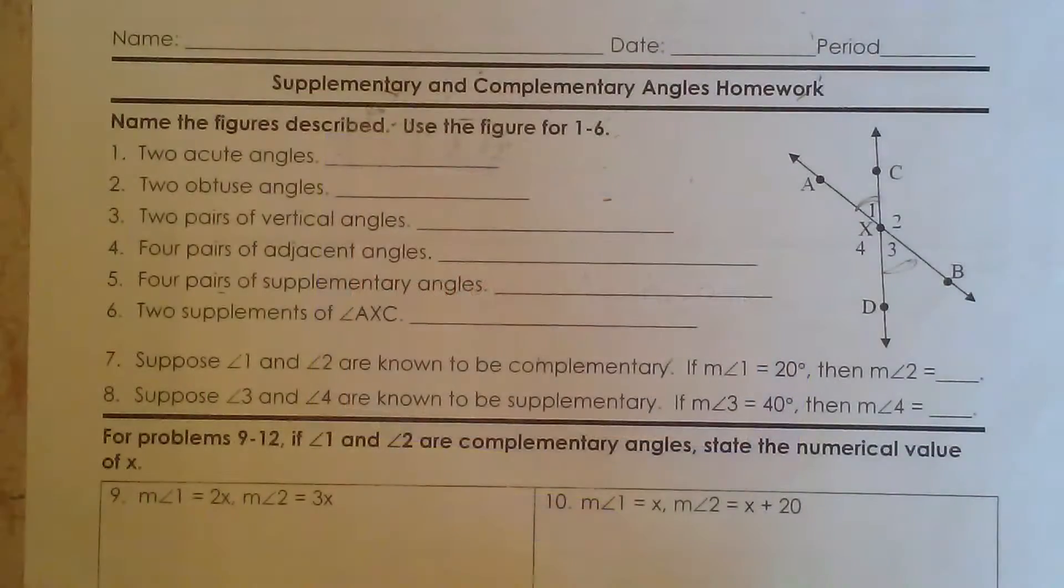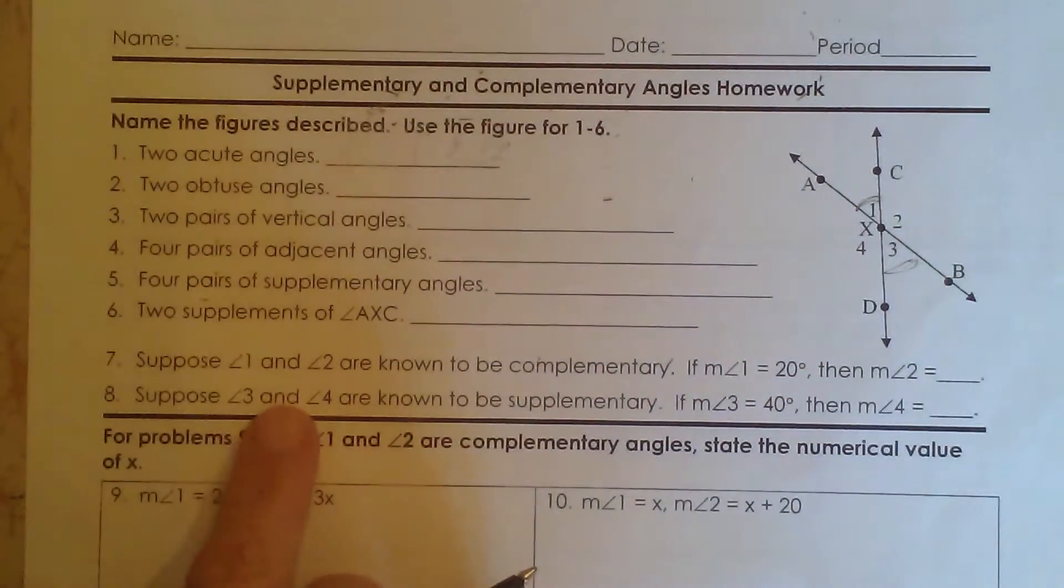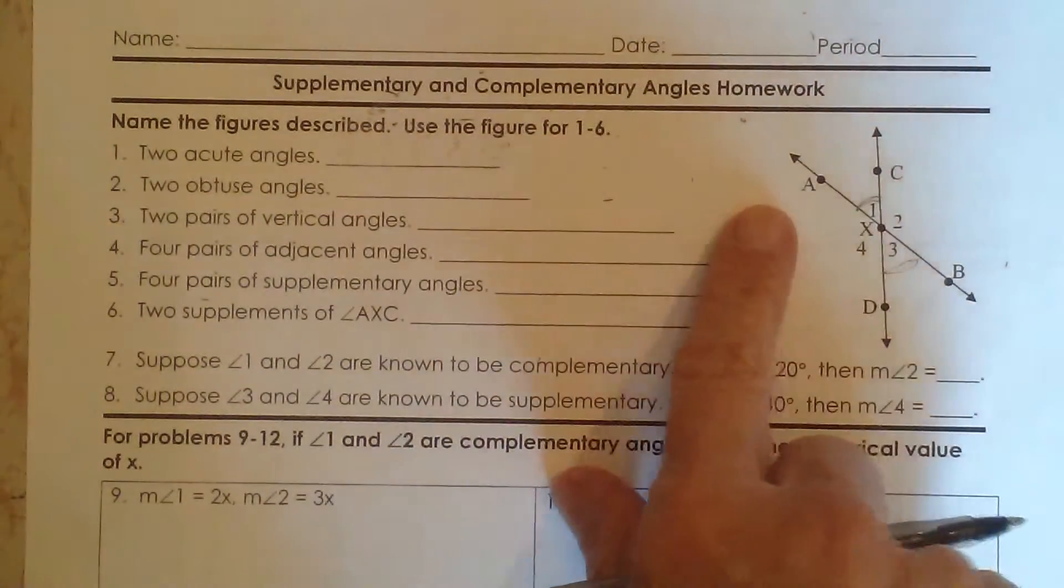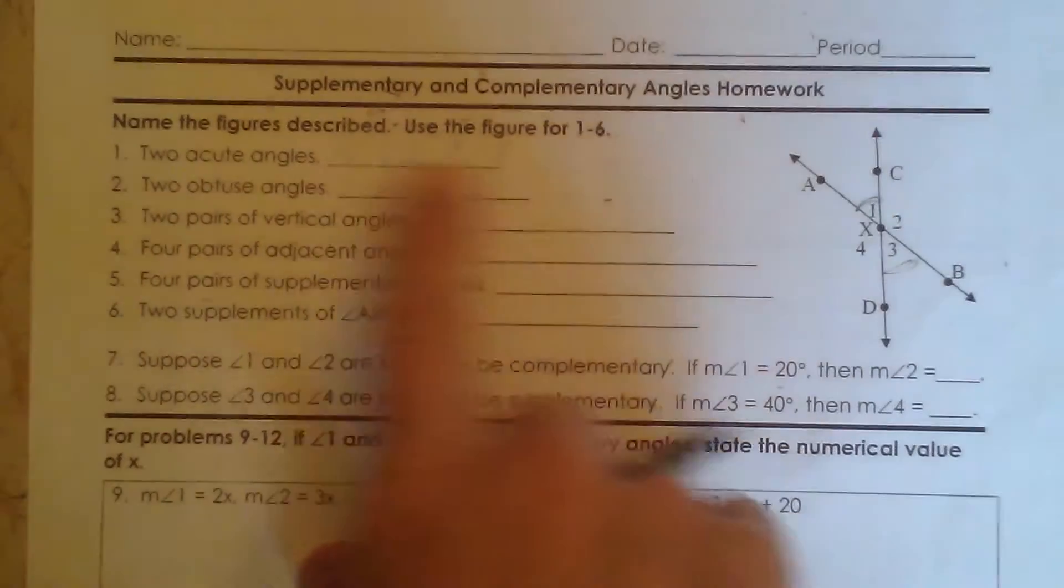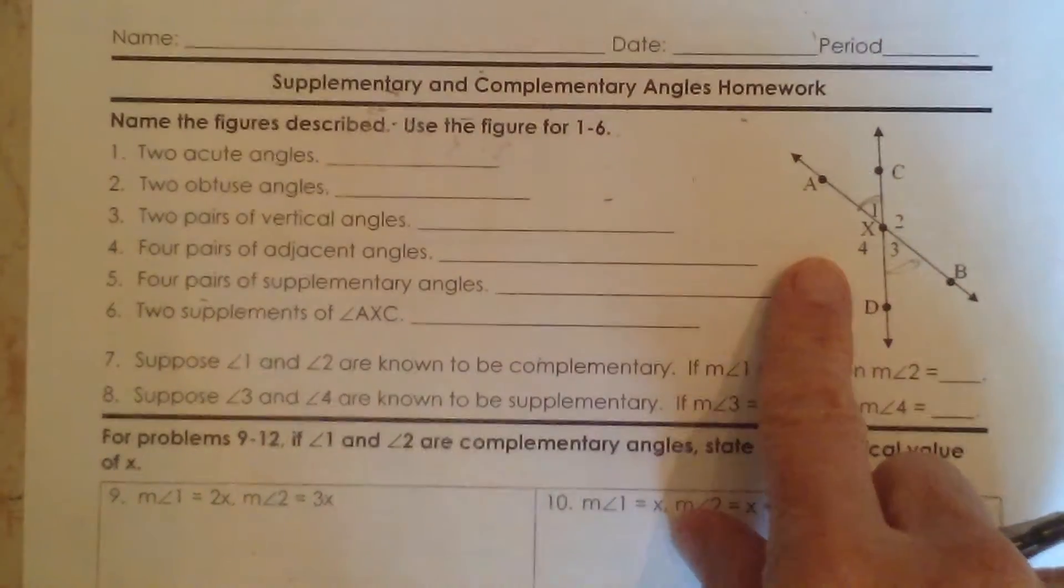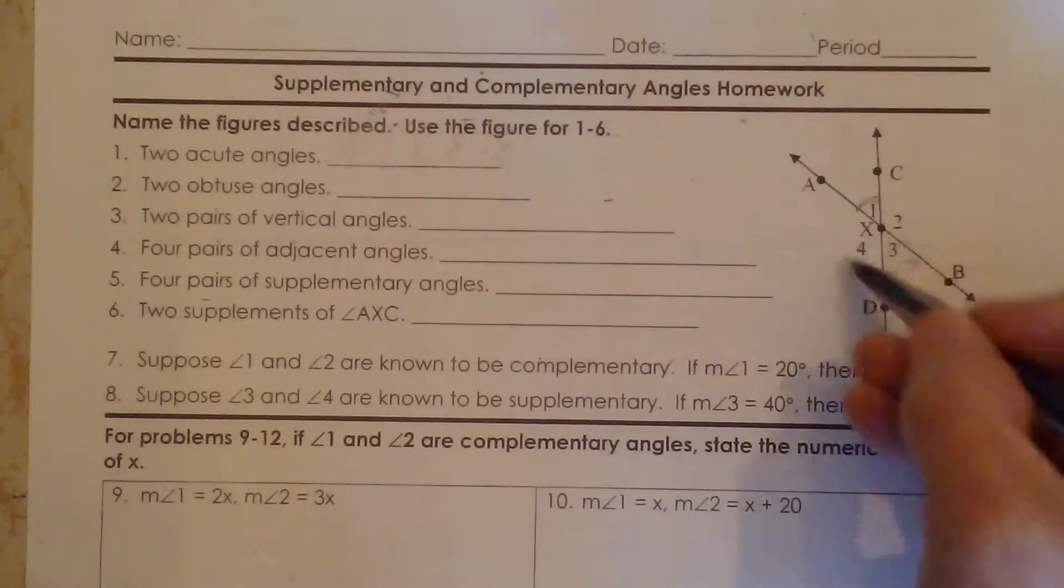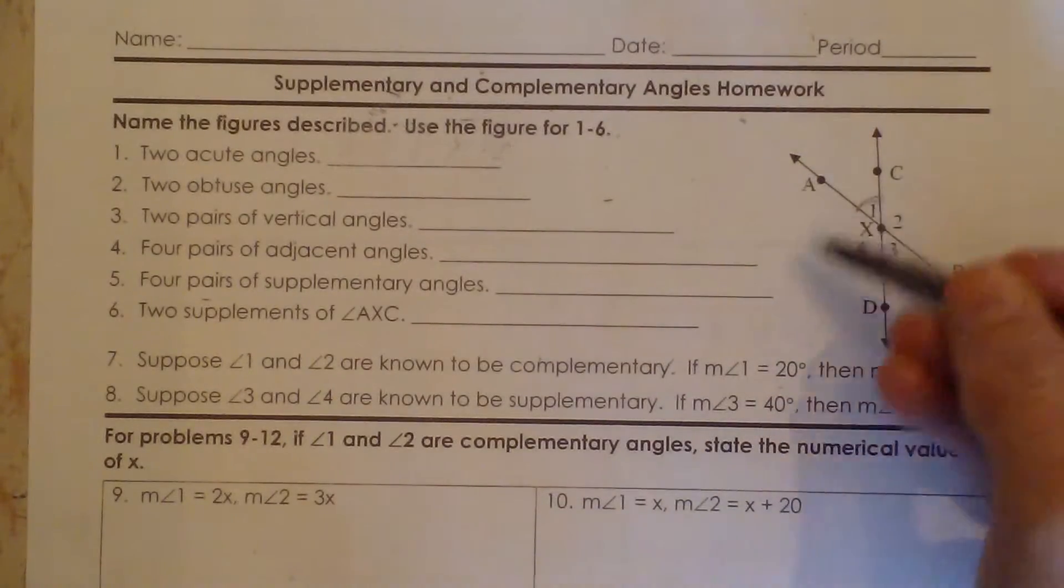Hey, welcome to Moo Moo Math. Today we are going to look at different vocabulary words along with the diagram. So the first thing we're going to do is we're going to name some acute angles from the diagram. In this diagram we have one, two, three, four angles at the center and I'm going to name those with those angle numbers.